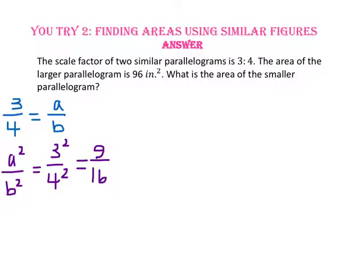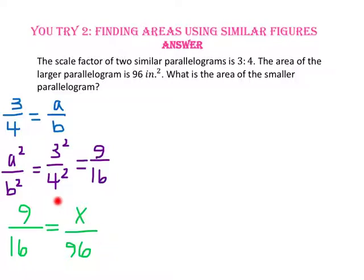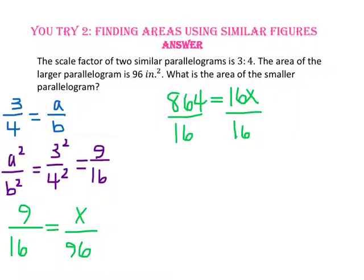Let's use the ratio of our areas to write a proportion to find the area of the smaller parallelogram: 9 to 16 equals x to 96. The area of the larger parallelogram corresponds with the larger number in our area ratio. Using cross product property: 9 times 96 equals 864, and 16 times x gives us 16x. Divide both sides by 16, and x equals 54. So the area of the smaller parallelogram is 54 inches squared.